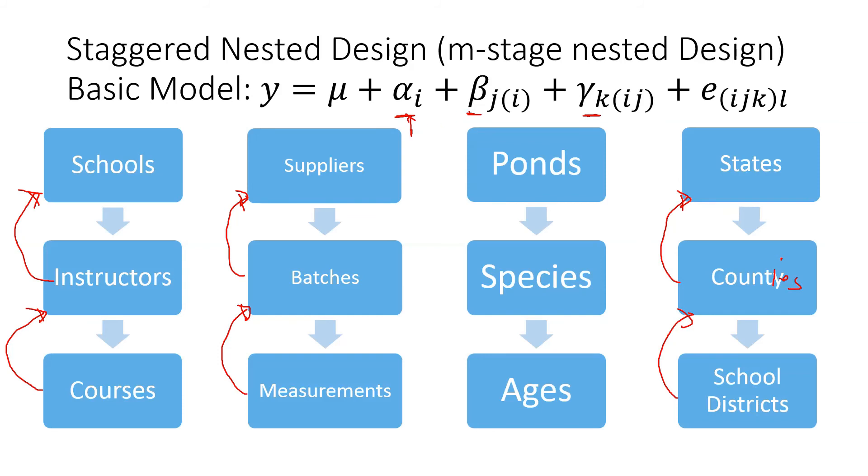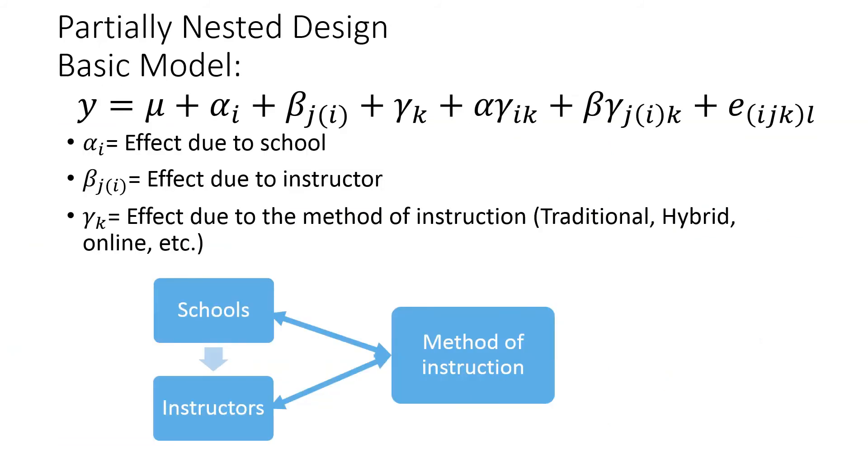The next one is a combination of crossed and nested, called partially nested. Same example of school and instructor—we know that instructors are nested in schools. So school is factor A, instructor is factor B, and then we have factor C. Now factor C is not nested. Let's say we are testing the school effect, instructor effect, and also how the students are taking the classes—are they taking face-to-face traditional, or hybrid, or online, or other forms? It makes perfect sense to ask these questions: whether I would take this class from this university online or traditional, so the interaction makes sense. Imagine that all instructors are qualified to teach any of these methods, so what if I take this class with this instructor online or hybrid? In that case, the interaction makes sense as well.